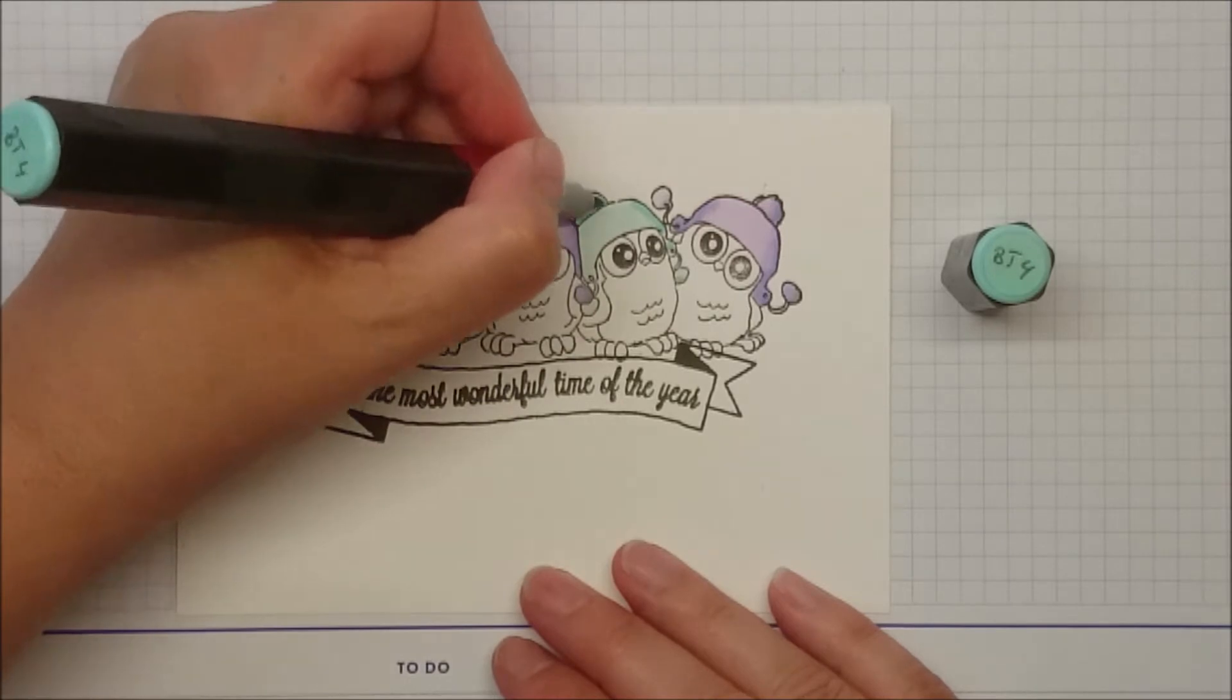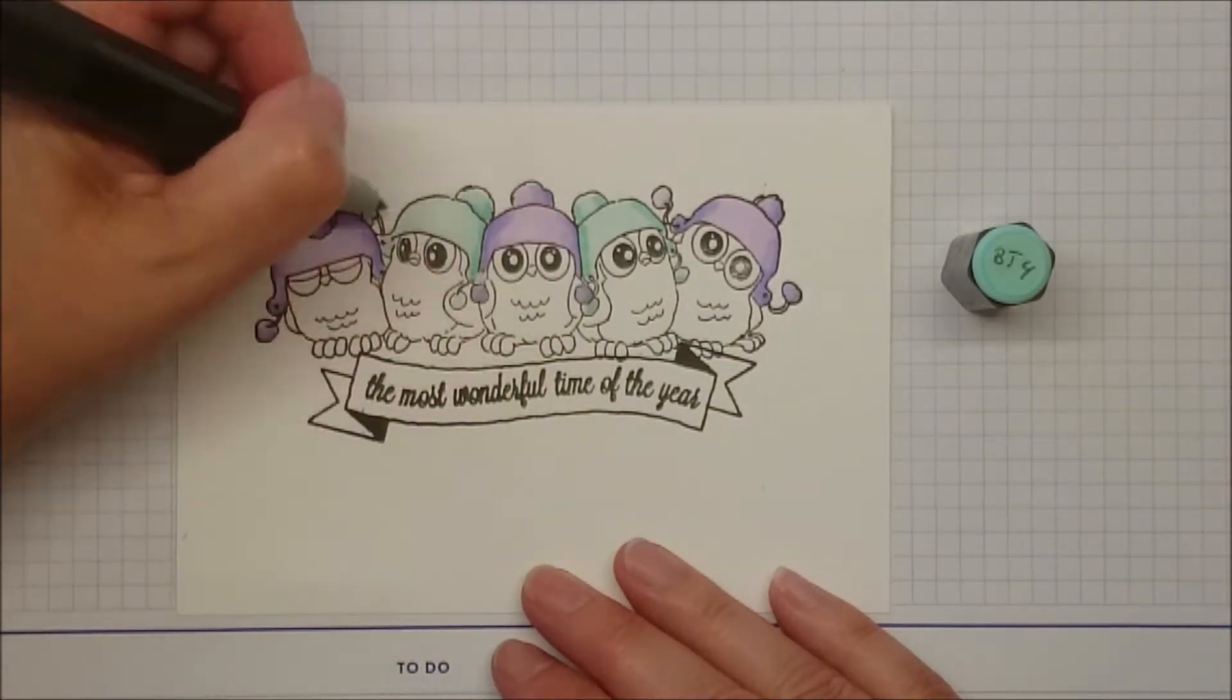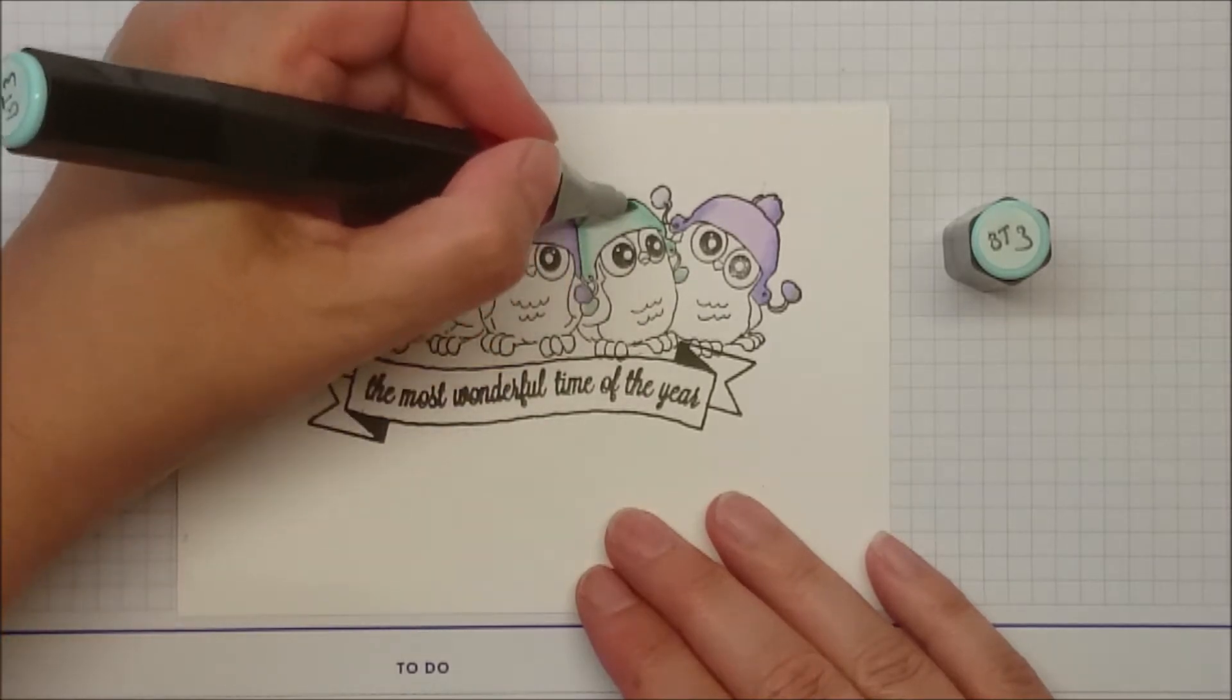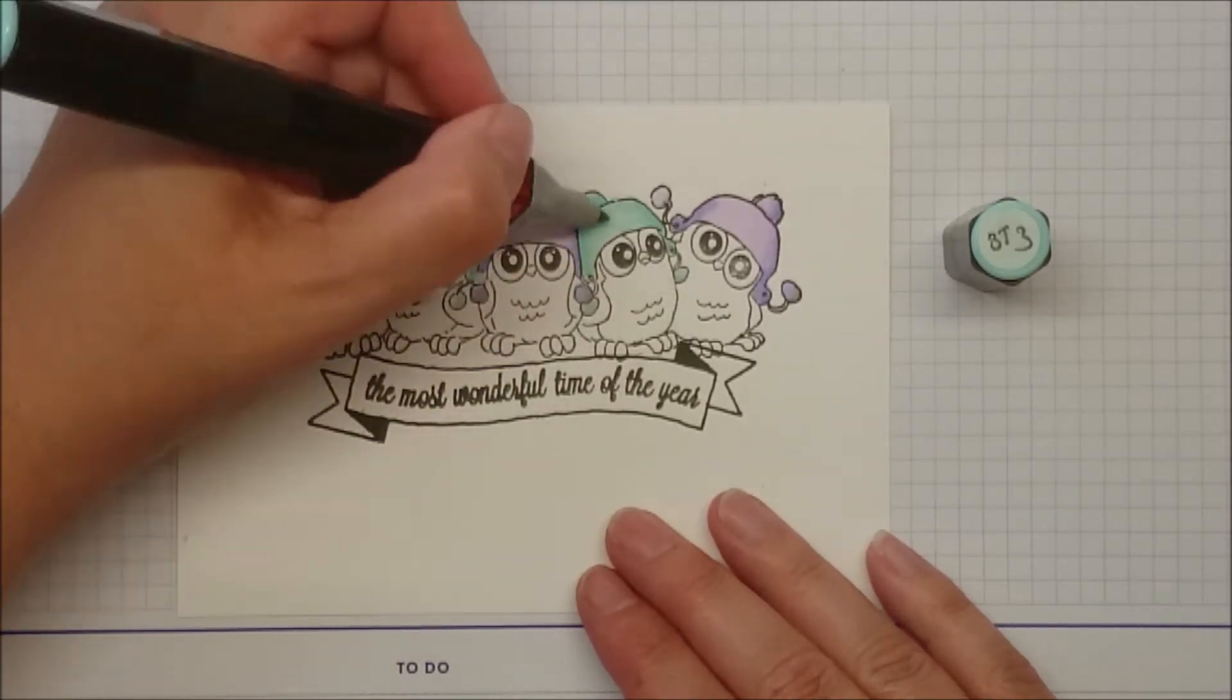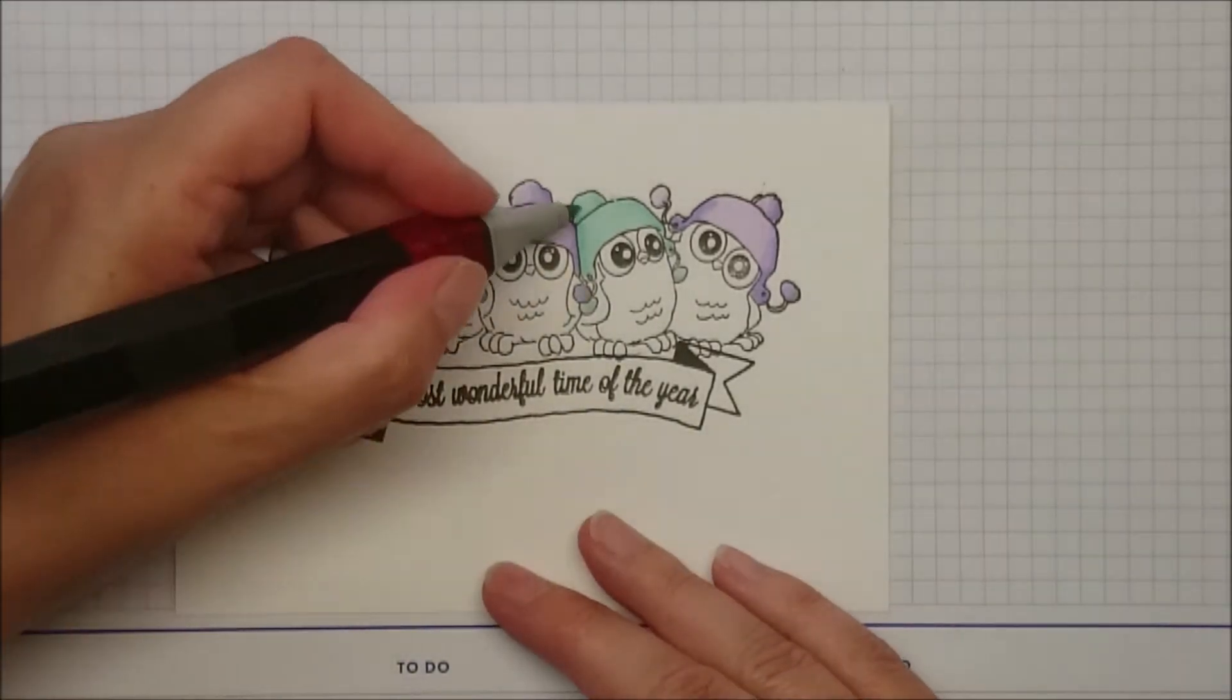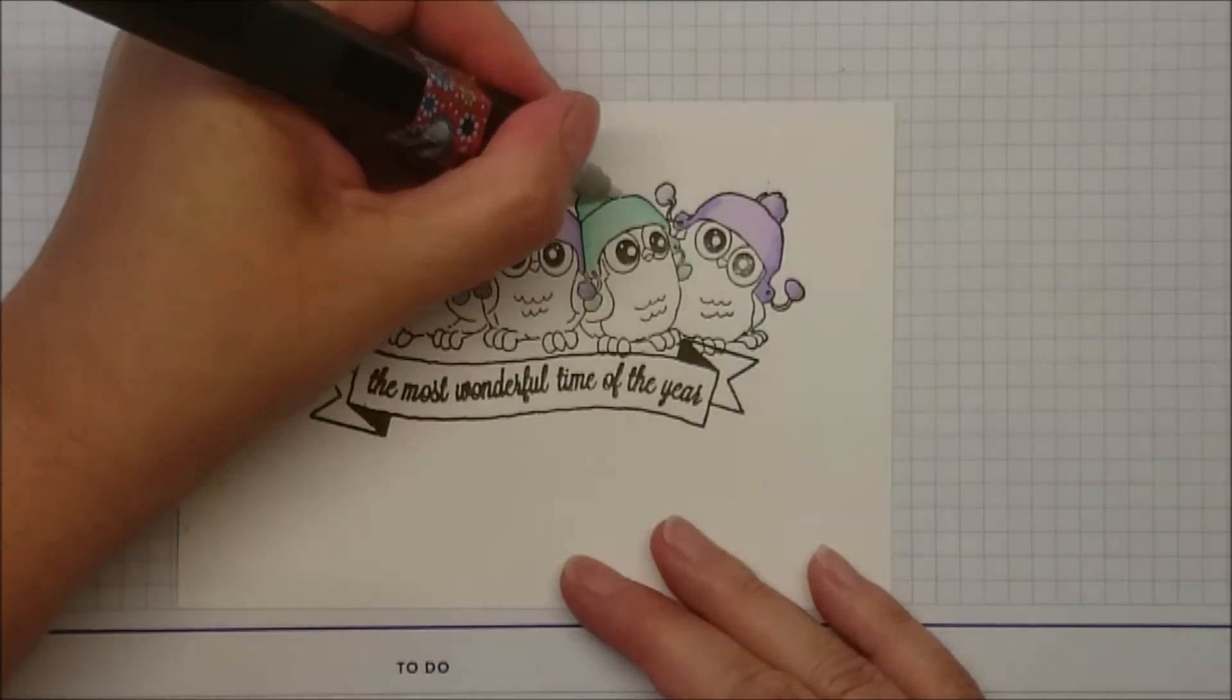And the same kind of happens with the BT4 and 3 and then 2 and 1. Not much later, so I kind of stuck to two colors only here. But then, yeah, HB2 and 3, I find them quite similar. You can see there's quite a harsh line between them.